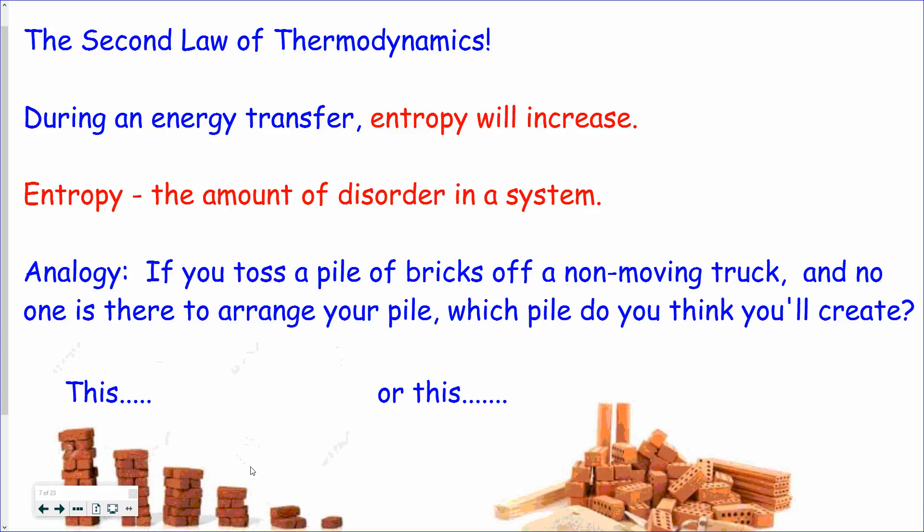So why does energy actually exit the system like it does? When we have an energy transfer, energy isn't a streamlined type of phenomenon. Energy wants to spread everywhere. And we call that an increase in entropy. I like to think about entropy as chaos. Entropy is the amount of disorder in the system.